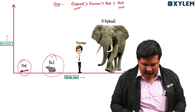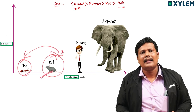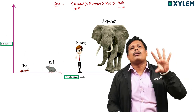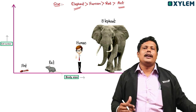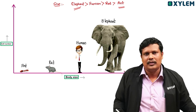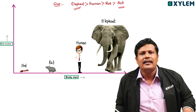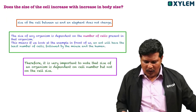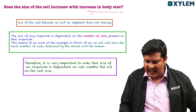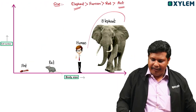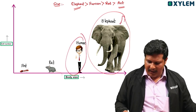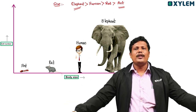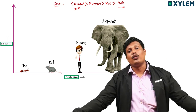If we consider a rat and an ant, we know that a rat is bigger than an ant. That means the number of cells in a rat will be more than that of an ant. So the number of cells actually determines the size of the organism. Now the question is: does the size of the cell increase with the increase in body size?